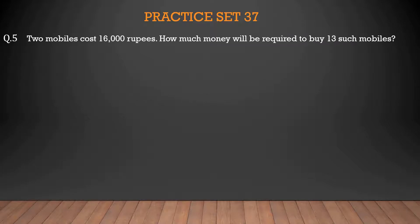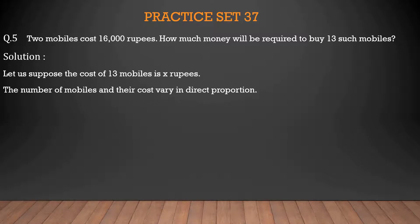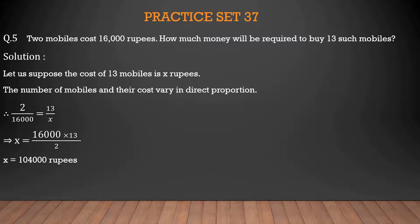2 mobiles cost 16,000 rupees. How much money will be required to buy 13 such mobiles? Let the cost of 13 mobiles be X rupees. The number of mobiles and their cost vary in direct proportion. So 2/16,000 = 13/X. Therefore X = 16,000 × 13 ÷ 2 = 1,04,000 rupees. Hence, the cost of 13 mobiles is 1,04,000 rupees.